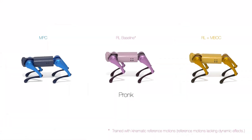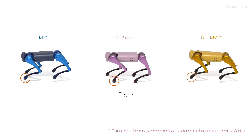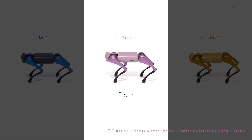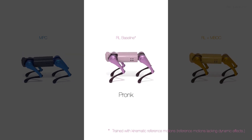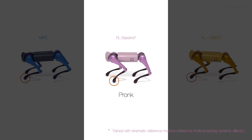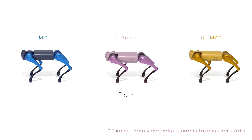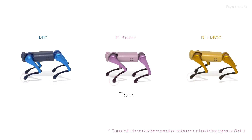The model-based control demonstration enables incorporating dynamic effects in generating reference motions. If the dynamic effects of flying phases are not incorporated into reference motions, an RL policy fails to learn jumping, instead converging to a behavior of skating on the ground, as demonstrated in the RL baseline. Meanwhile, our approach successfully trains an RL policy that can generalize to more dynamic and agile motions.